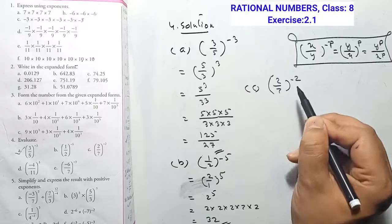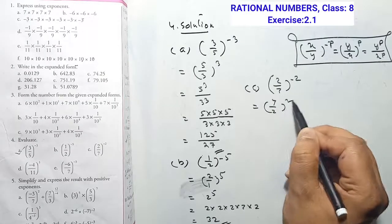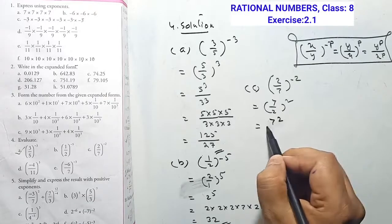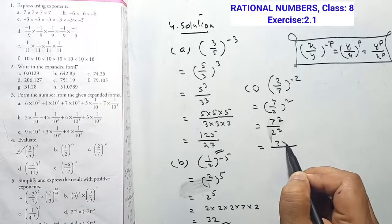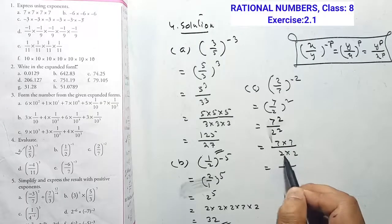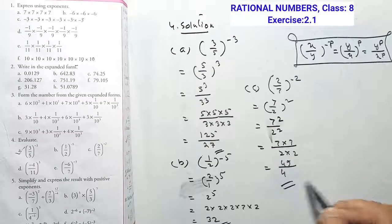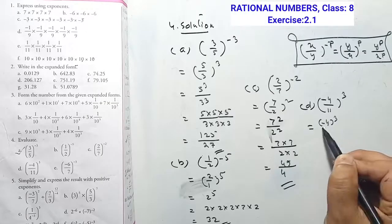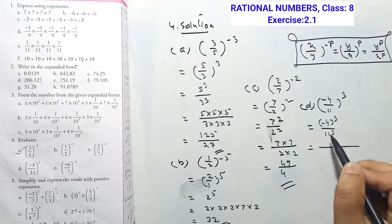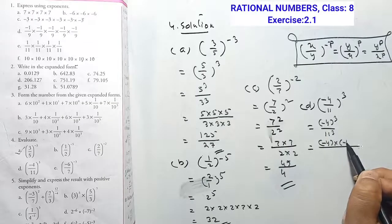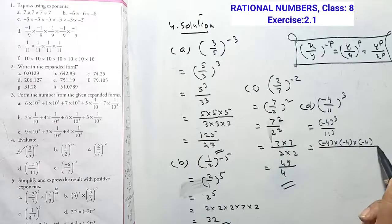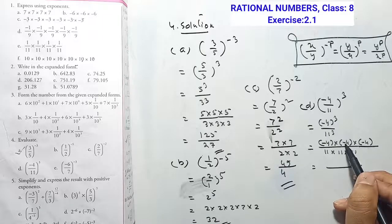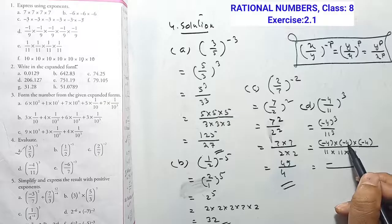For (2/7) to the power minus 2: write (7/2) squared = 7×7 over 2×2 = 49/4. Next: (−4/11) power 3 — expanded form is (−4) × (−4) × (−4) divided by 11 × 11 × 11. Minus × minus = plus, plus × minus = minus. So 4×4=16, 16×4=64. Denominator: 11×11×11 = 1331.